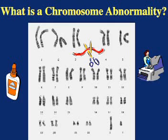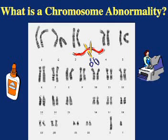Quite literally, anything you could do to this picture with scissors, glue, and a copy machine could really happen — and it does really happen. It's just that the majority are not compatible with life. The majority of babies conceived who have chromosome changes are miscarried early in pregnancy. But those babies with any of these types of chromosome changes that survive to be born are said to have chromosome abnormalities.